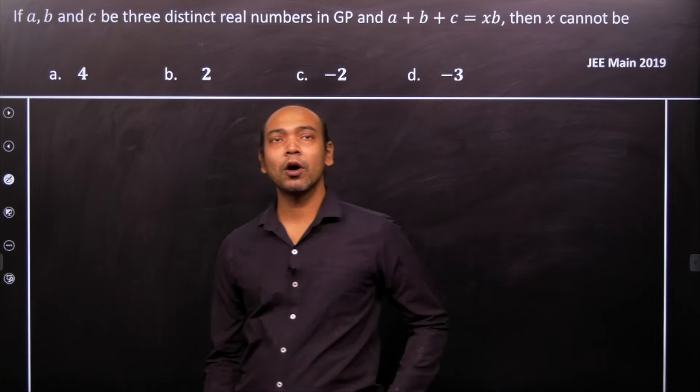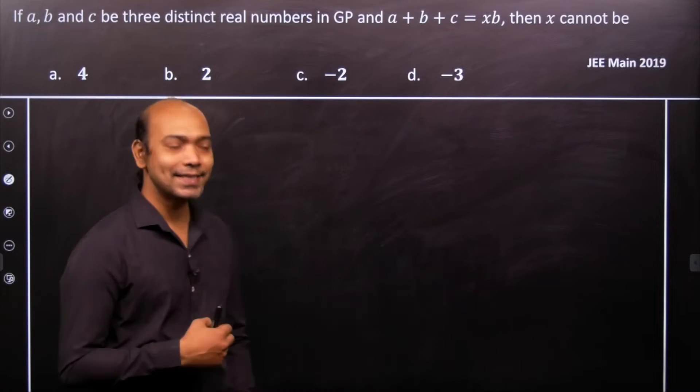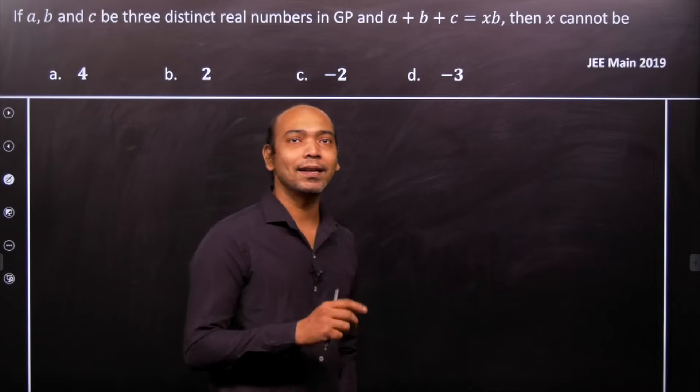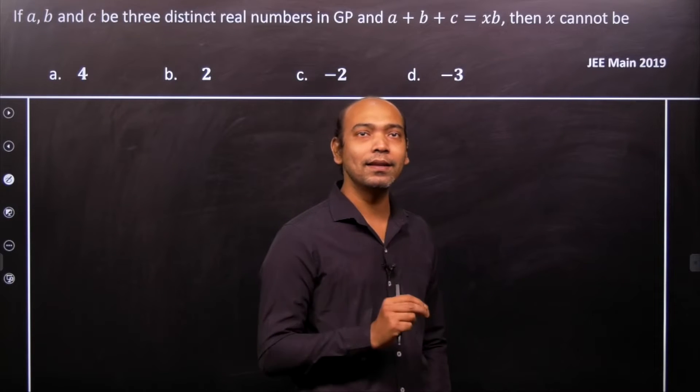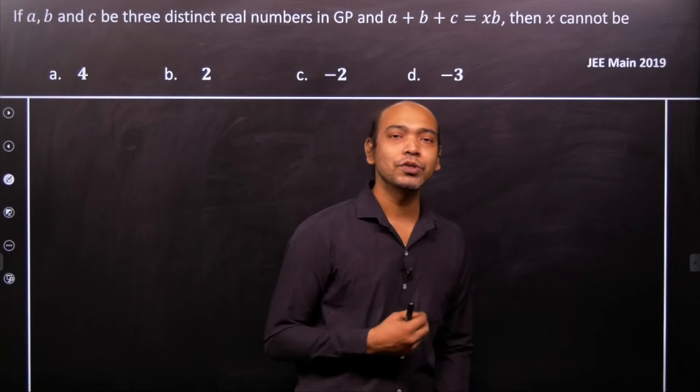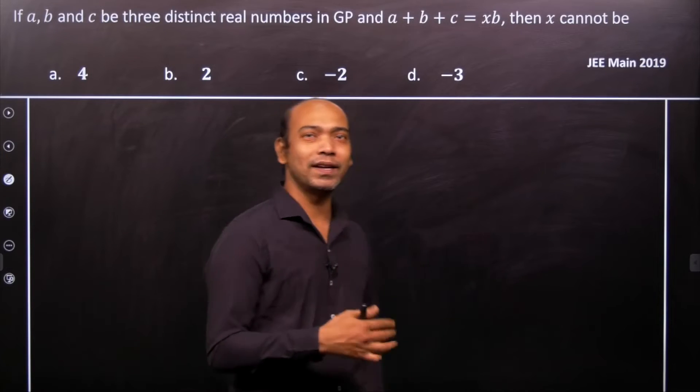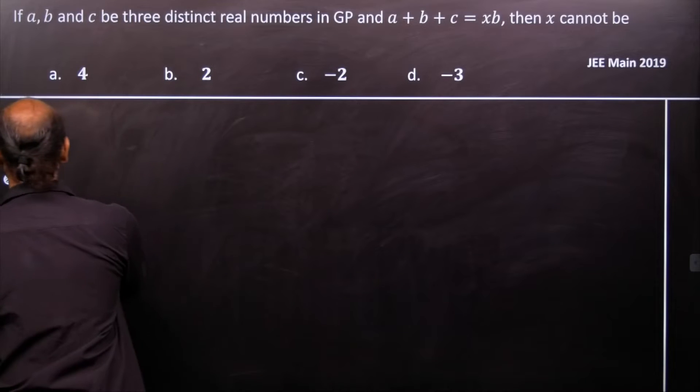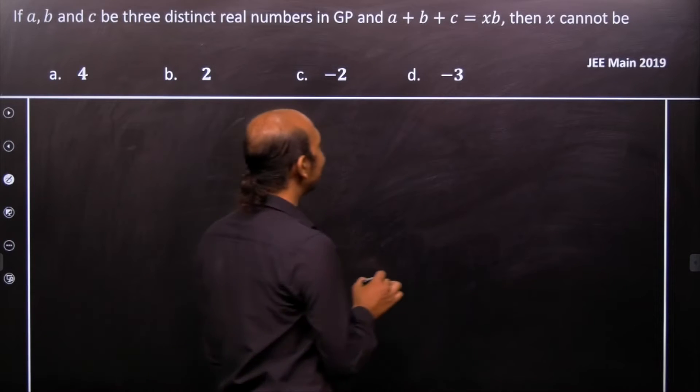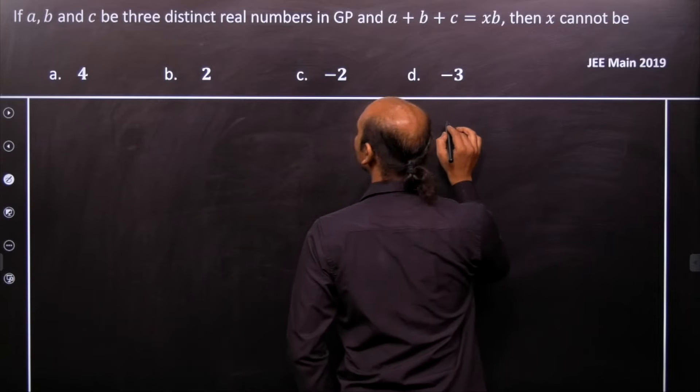Hi, see this. This is a problem regarding GP, and it says that a, b, c are three distinct real numbers in a GP. So therefore, we can consider that they are consecutive. Let us assume that and go ahead stating that a, b, c...